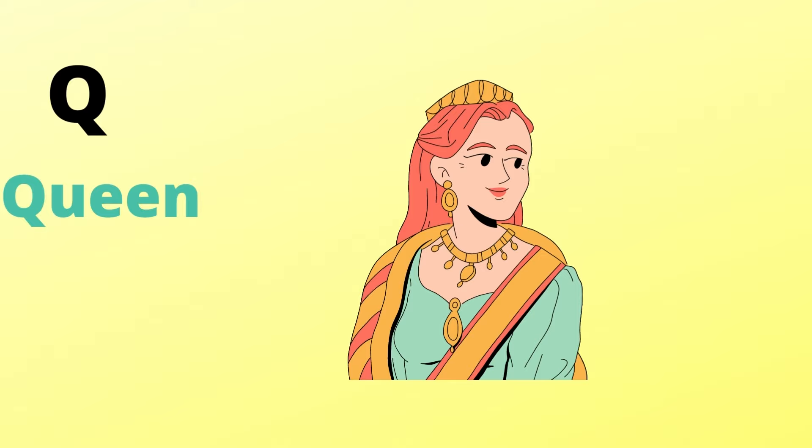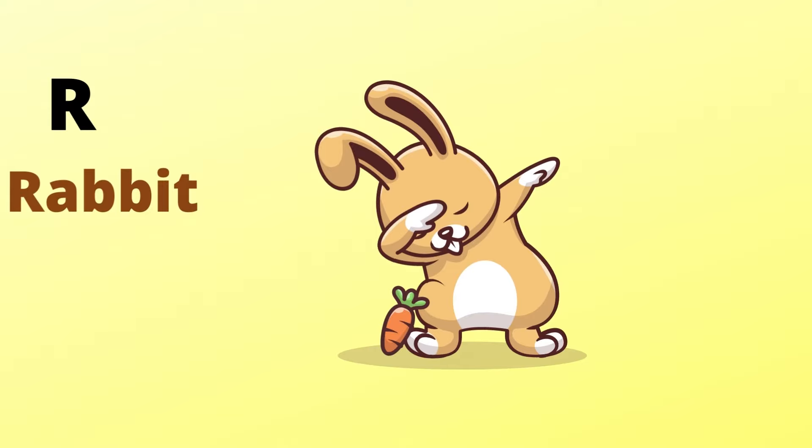Q is for queen, c-c-queen. R is for rabbit, r-r-rabbit.